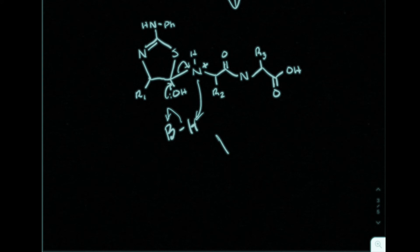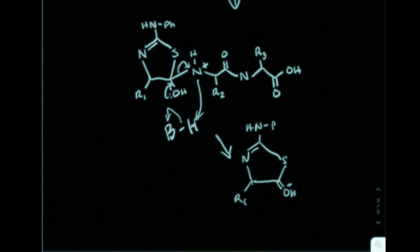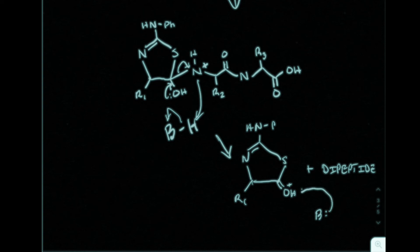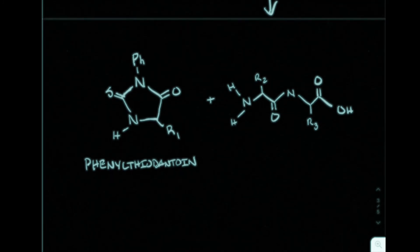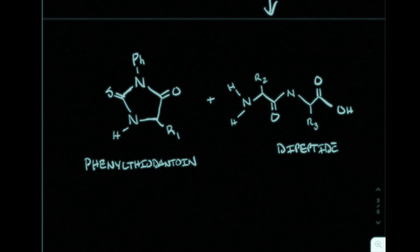This produces a new intermediate plus the dipeptide. The base in solution then deprotonates the oxygen, leading to the final products: a new dipeptide, which can be taken out of solution and rerun through more Edman degradation to produce the sequence we're looking for.